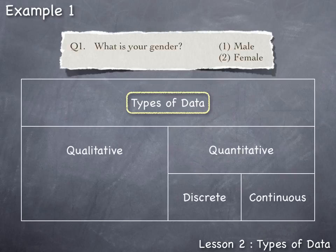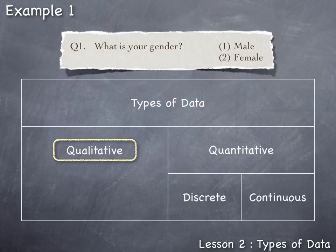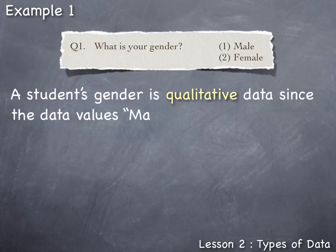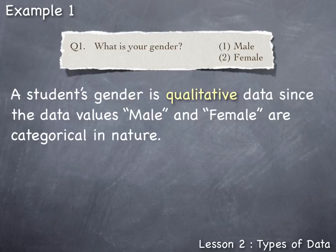With respect to question one on the student survey, what is your gender, the responses were either male or female. Male and female are basically labels or categories, thus making gender qualitative data. A student's gender is qualitative data since the data values, male and female, are categorical in nature.